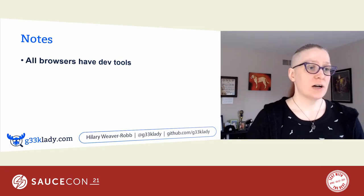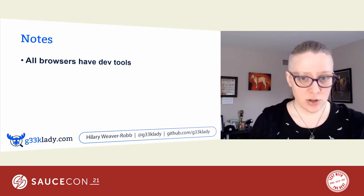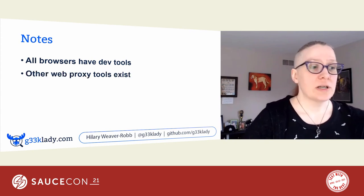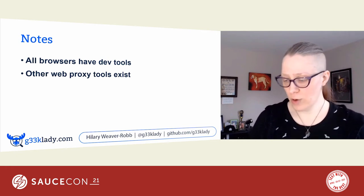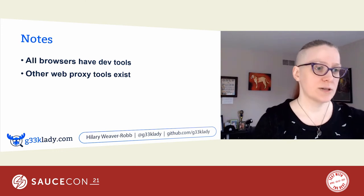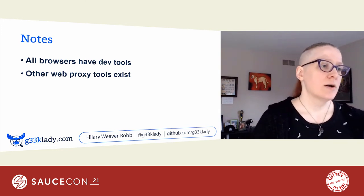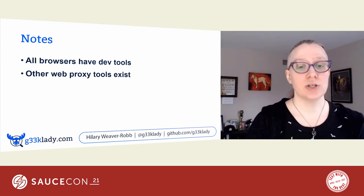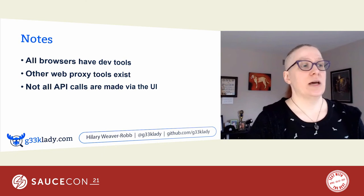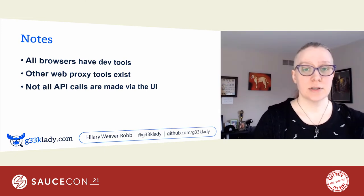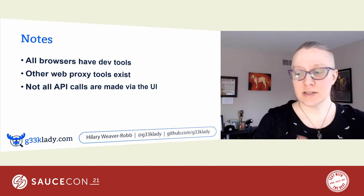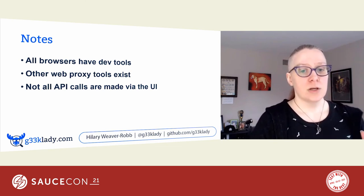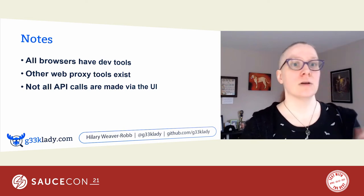So that is a quick view through how our UI uses the API. Some notes: all browsers have DevTools, though some have more features than others. Some have extensions — Firefox has Firebug with lots of extensions. Other web proxy tools exist, so you don't need to be in a browser. If you have an app on your phone that you want to test, you can use tools such as Fiddler, Charles Proxy, Wireshark, or even for a desktop application. And note that not all API calls are made through the UI — sometimes there's a backend service that does that work. So you're not always going to get everything from DevTools or from the UI, but those should still be in the Swagger.